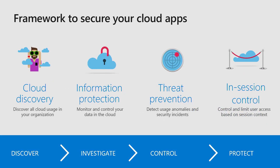Cloud App Security is a complete framework that gives you insights on the user's activities. You can get the insights on user activities by having a discovery of your network — you can do the discovery by uploading your end-users' firewall logs or the user's activity logs from your SIEM server. You can do this as a one-time upload to get a snapshot report where you can see your sanctioned or unsanctioned applications being used by the users. Then you have information protection, based on which you can use the DLP policies in 365 or Azure Information Protection policies to apply protection on your data.